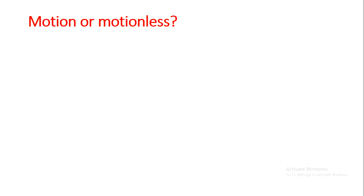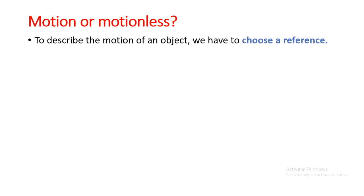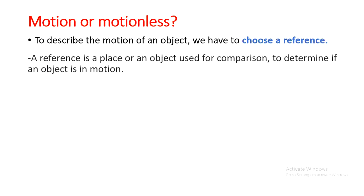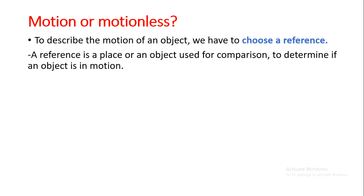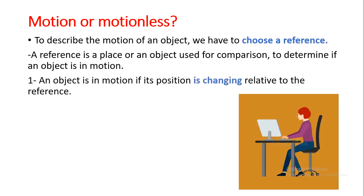So how can we explain if a person is in motion or motionless? To describe the motion of an object, we have to choose a reference. A reference is a place or an object used for comparison to determine if an object is in motion or motionless. For example, you are sitting at the laptop — with respect to the laptop, is the girl motionless or in motion?